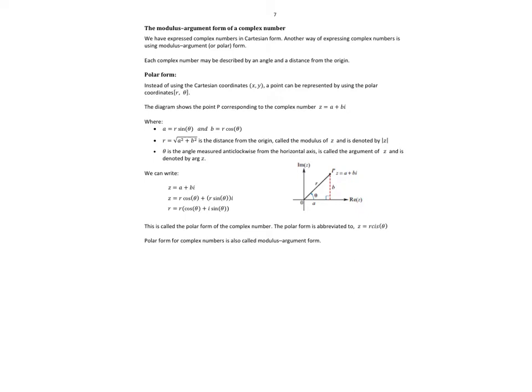We've got some properties there. We're saying A is R sine theta, B is R cos theta, the modulus is the square root of A squared plus B squared, and the angle we call the argument of Z.